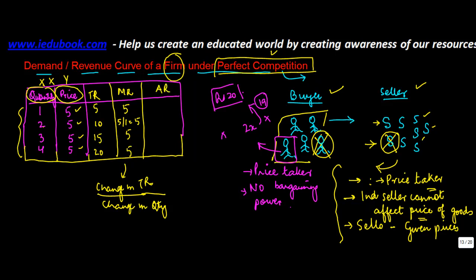Now if you compute the average revenue — average revenue is total revenue divided by quantity. So 5 divided by 1 gives you 5. 15 divided by 3 again gives you 5. And 20 divided by 4 again gives you 5.